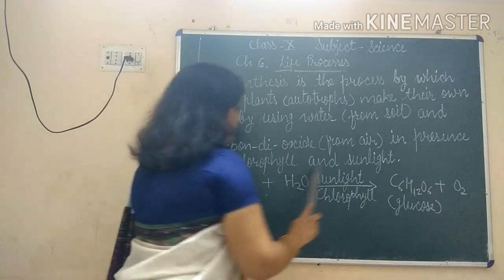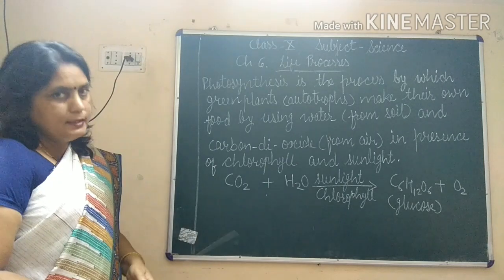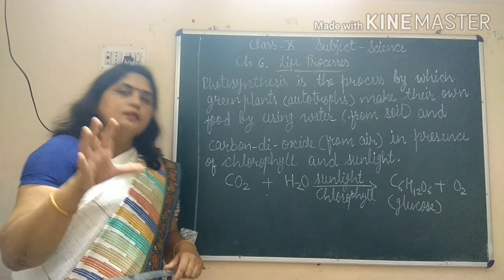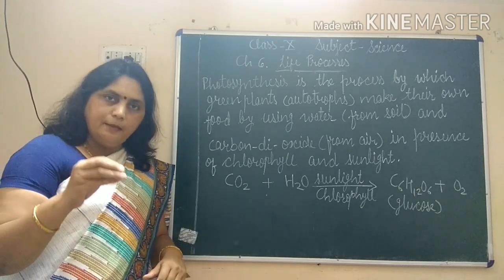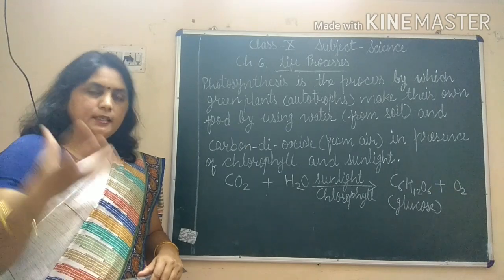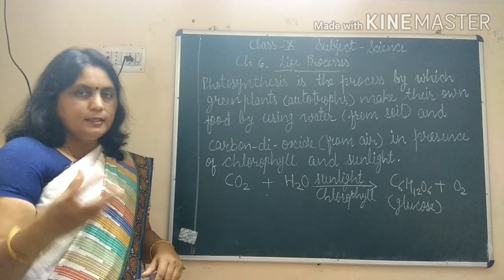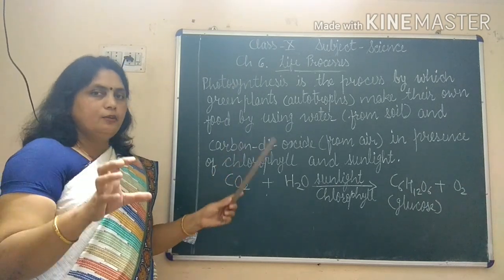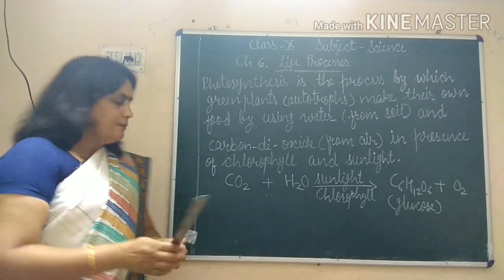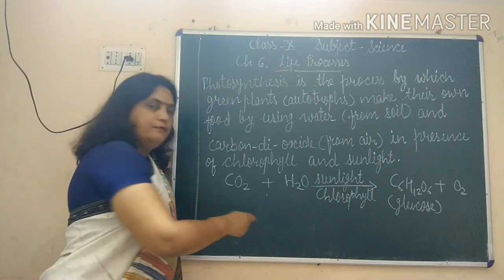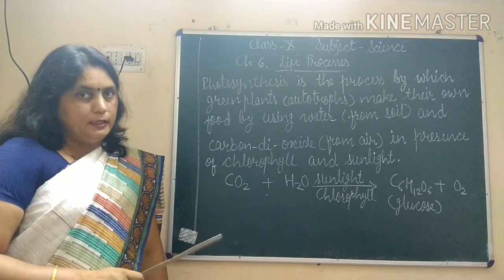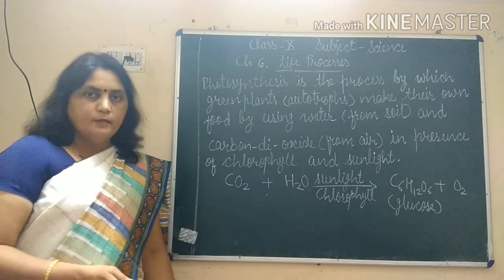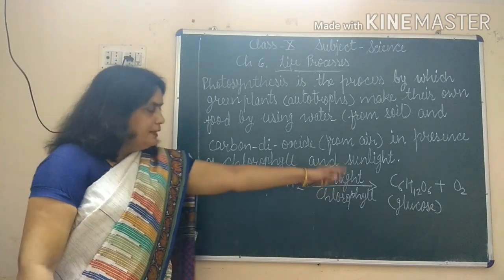In presence of chlorophyll and sunlight. Green plants which have chlorophyll in them trap sunlight, that is solar energy. In presence of sunlight and chlorophyll, they can make their own food by using carbon dioxide and water as raw materials. Carbon dioxide they take from air and water they take from soil.